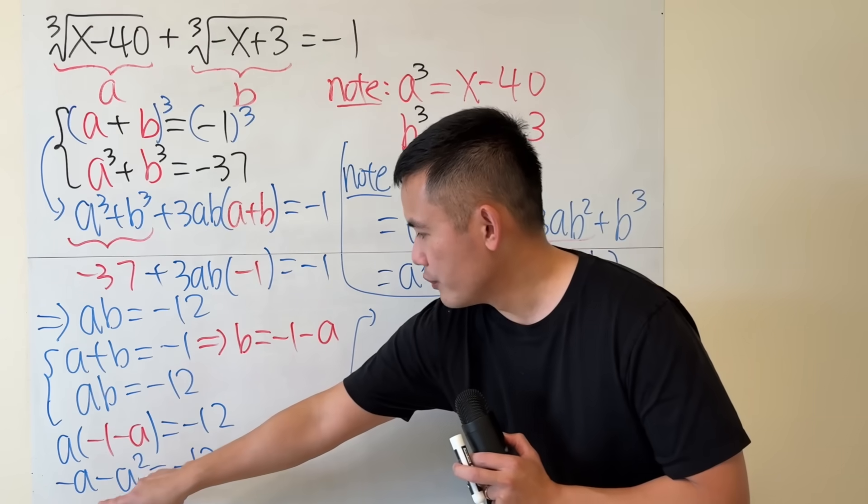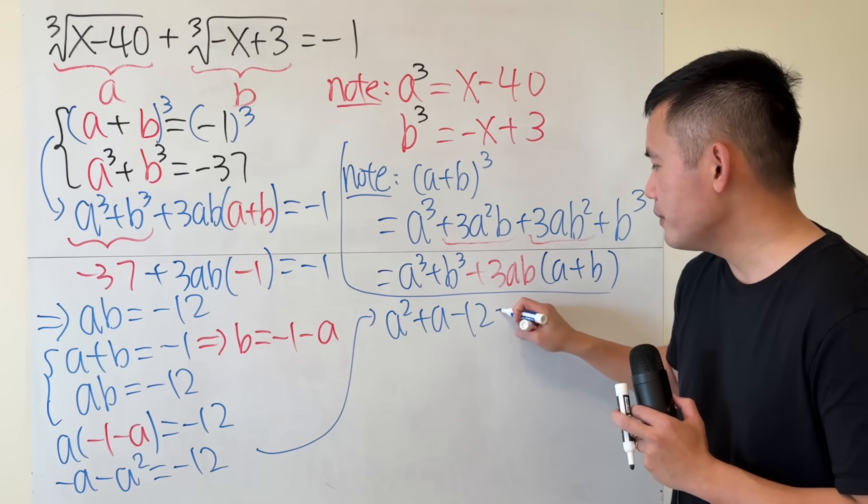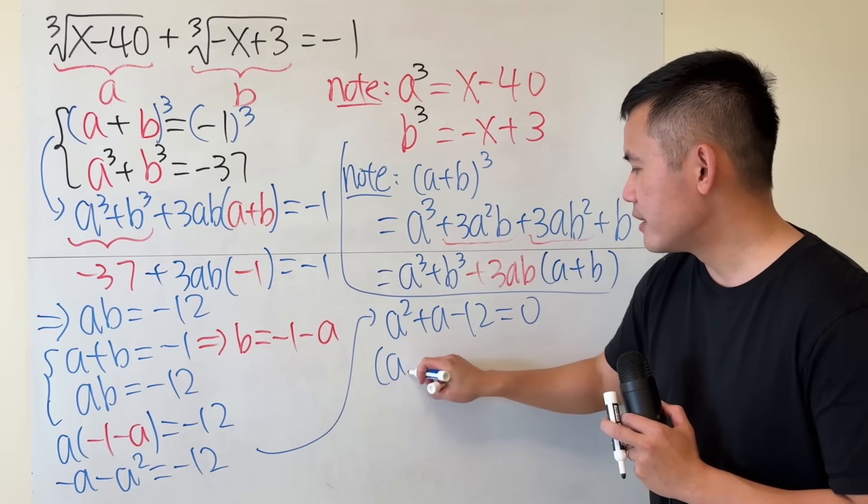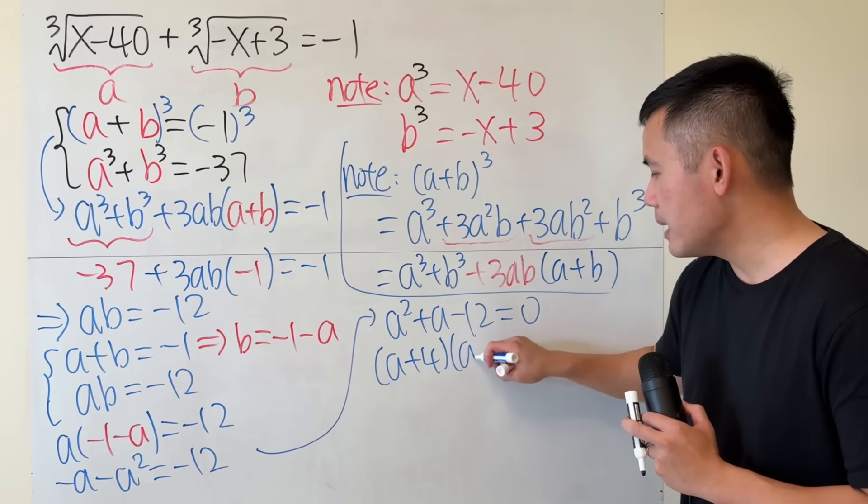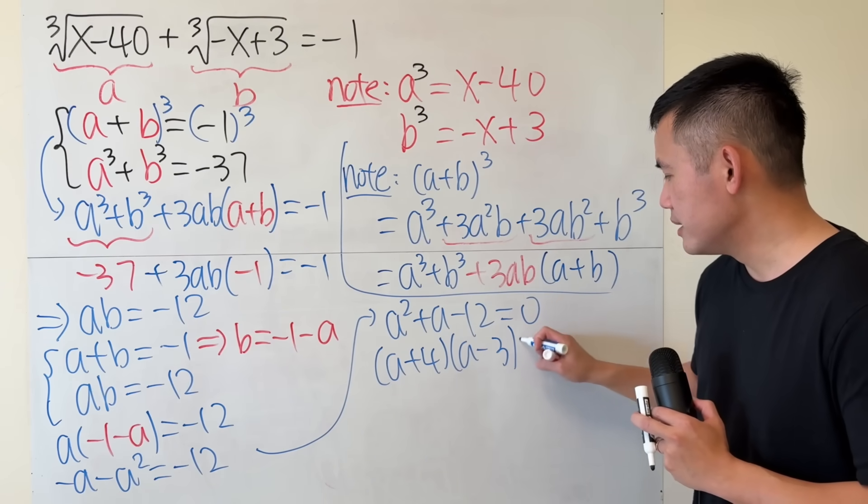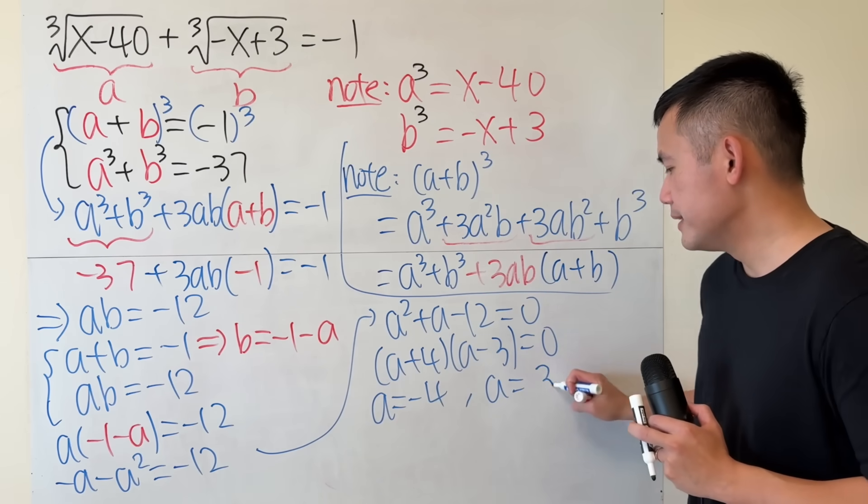We will then have moved this to the other side, but write it down first. a squared plus a minus 12 equals 0. So factoring, we get a plus 4 times a minus 3 is equal to 0. So a equals negative 4, or a equals 3.